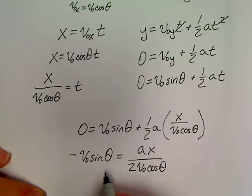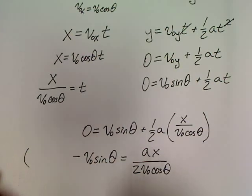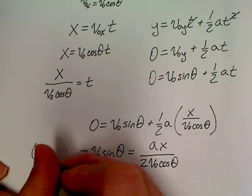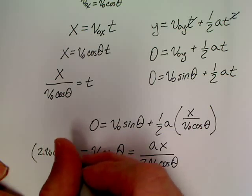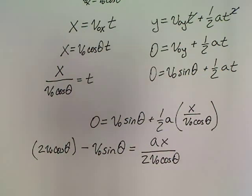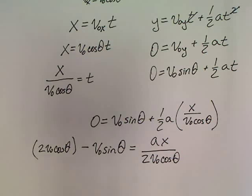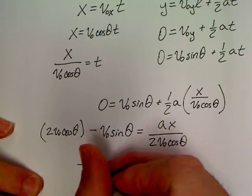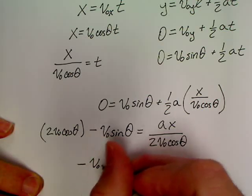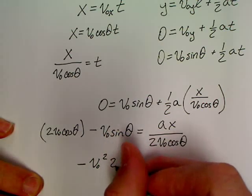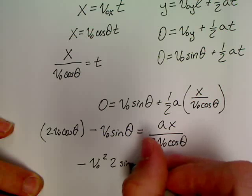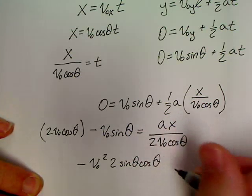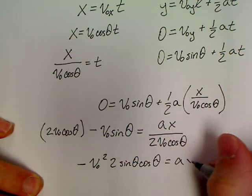And we end up with a x over 2 V0 cos θ here. Well, now let's do more algebra. Let's multiply the other side by 2 V0 cos θ. And when we multiply the other side by 2 V0 cos θ, we get negative V0 squared 2 sin θ cos θ equals a x.